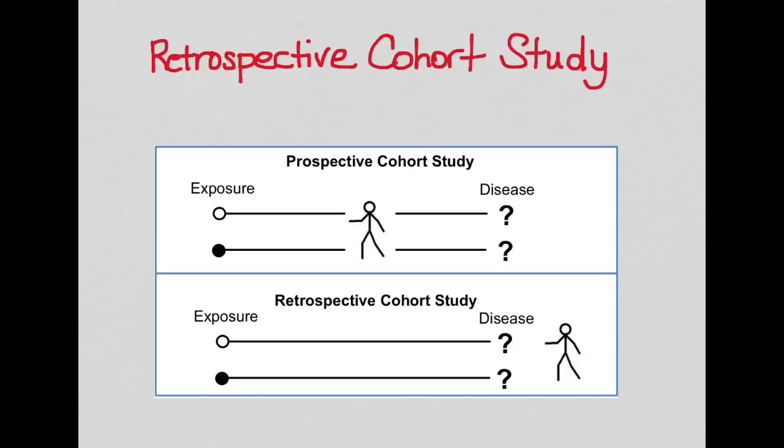Okay, so we have to mention that there are two different types of cohort study: the prospective cohort study and the retrospective cohort study. What we've talked about so far is the prospective cohort study, and really they're very similar.